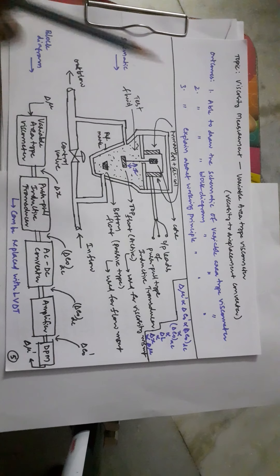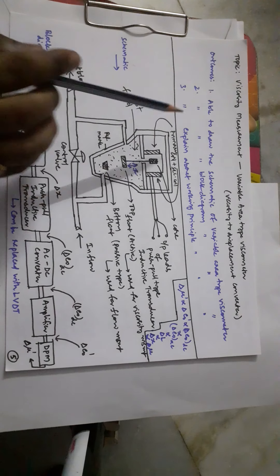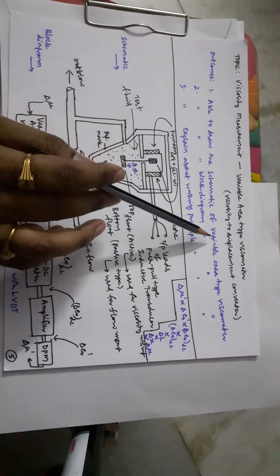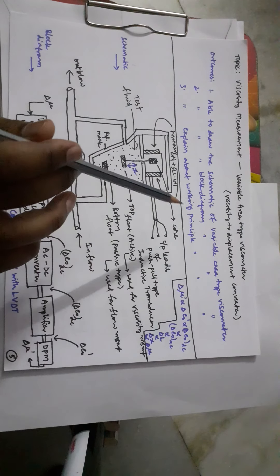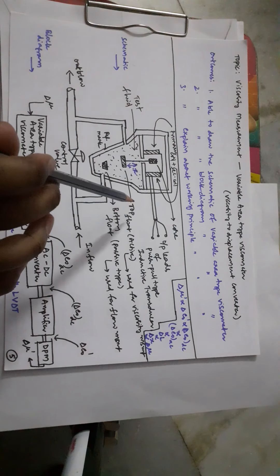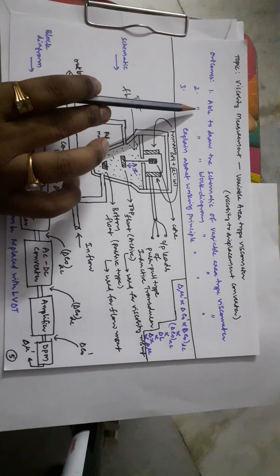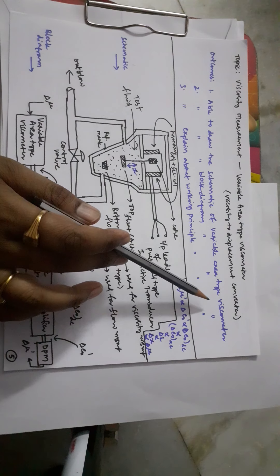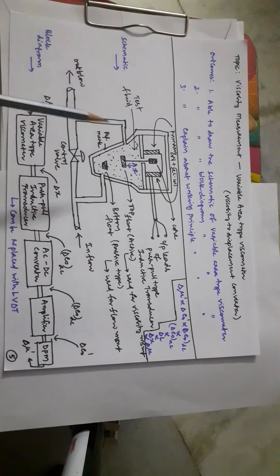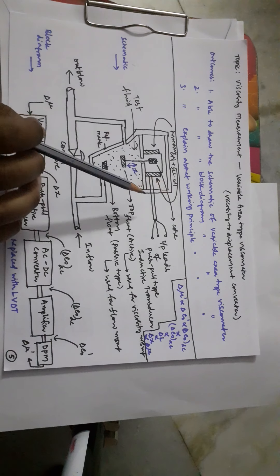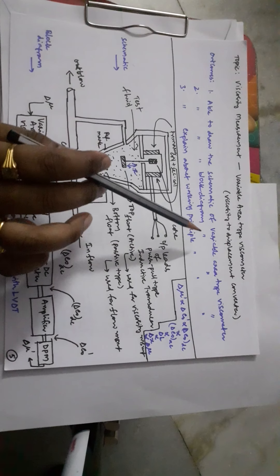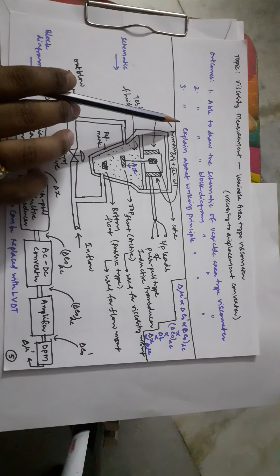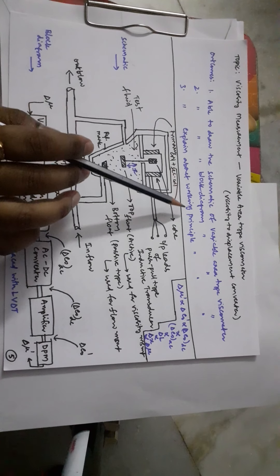The outcomes of this particular topic are three. First, the student will be able to draw the schematic of the variable area type viscometer and mention its different elements. Second, the student will be able to draw the block diagram of the variable area type viscometer, representing it as an electrical transducer and mentioning different variables. Third, the student will be able to explain the working principle of the variable area type viscometer.